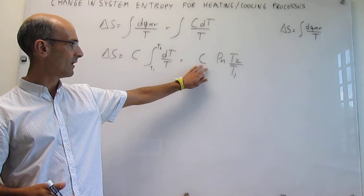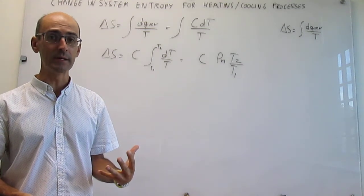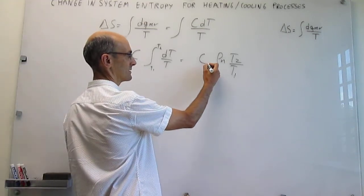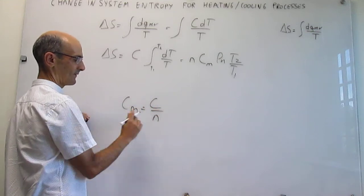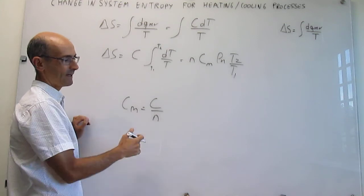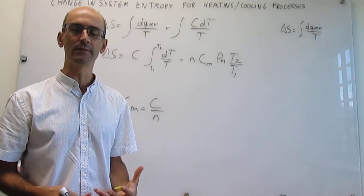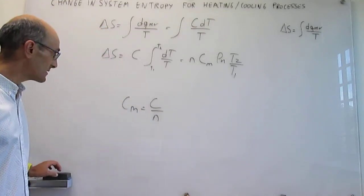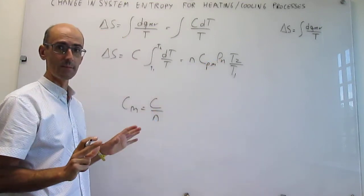We need to discuss what that heat capacity is — there are various forms. There's an extensive heat capacity that depends on system size, but we usually work with intensive or per-mole heat capacities. The molar heat capacity is the extensive heat capacity divided by the number of moles, so the heat capacity C equals the number of moles multiplied by the molar heat capacity. Also, your heat capacity varies depending on whether you're working at constant pressure or constant volume, and you need to specify which one applies to your problem.